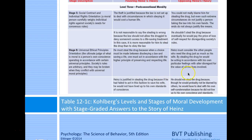Against Heinz in stage six: he must consider other people who need the drug just as much as his wife—by stealing it he acts with utter disregard for the value of all lives involved. Or he should not steal because though he would probably not be blamed by others, he would have to deal with his own self-condemnation for not living up to his conscience and standards.